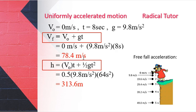Using v = v₀ + at, with initial velocity zero, acceleration 9.8 meters per second squared, and time eight seconds, we get the final velocity. For height, using h = v₀t + ½gt², with v₀ = 0, the formula simplifies to h = ½gt². Substituting g = 9.8 meters per second squared and t = 8 seconds gives the height covered.